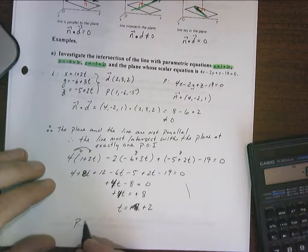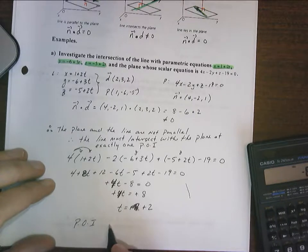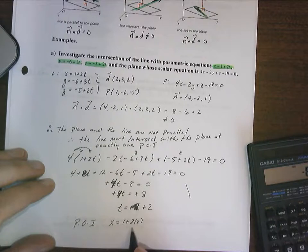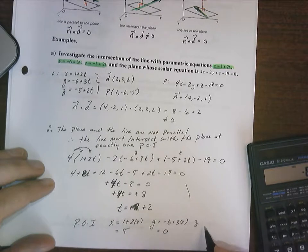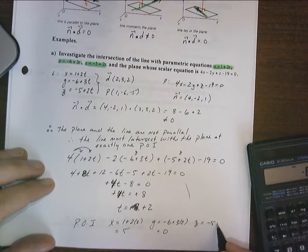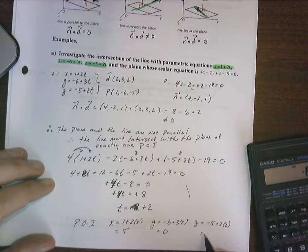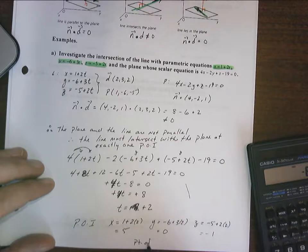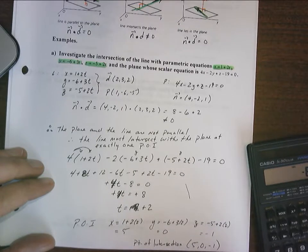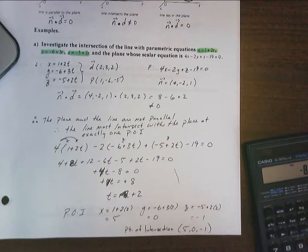So the point of intersection is going to be x equals 1 plus 2 times 2 is 5, y is going to be negative 6 plus 3 times 2 is 0, and z is going to be negative 5 plus 2 times 2, which is negative 1. So the point of intersection is given by 5, 0, negative 1. Okay ladies and gentlemen, that's it for that one. I'll come back with example B.